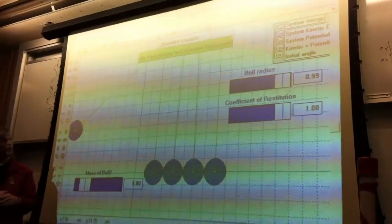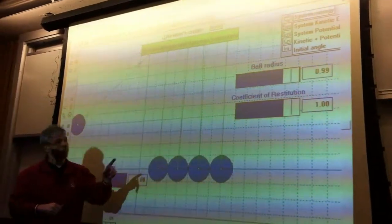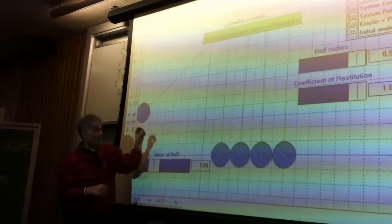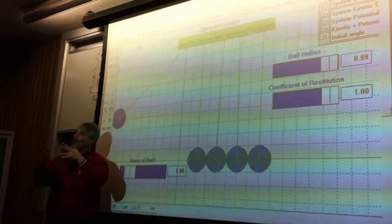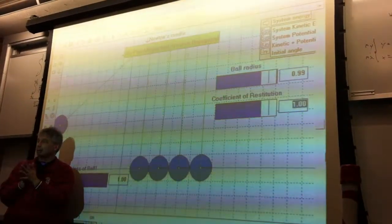The other thing that's playing is coefficient of restitution. What is that? Well, it's a funny number and it says when an object here strikes an object here, how much does it stick together versus how much does it bounce? This one says I want to have a nice, what's called elastic collision.